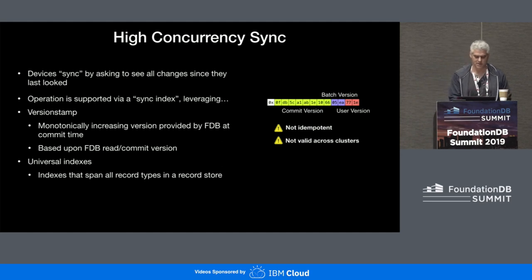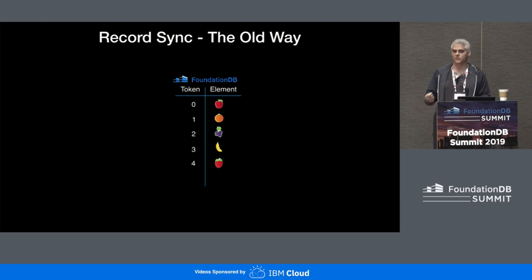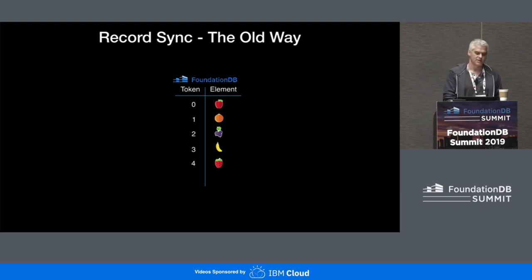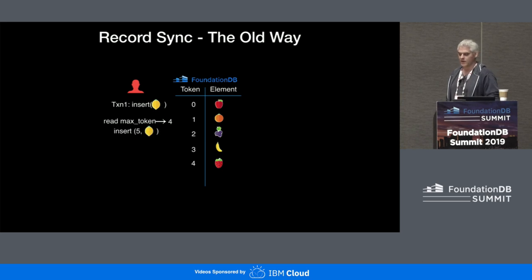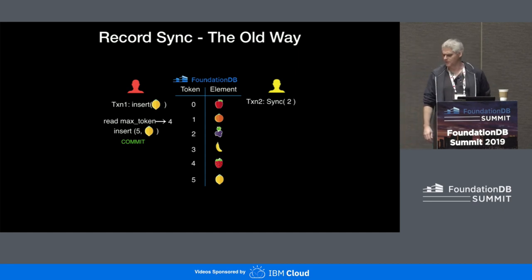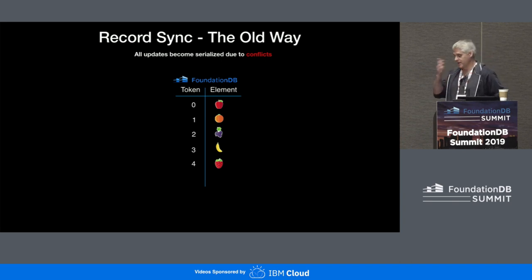Before discussing this in action, let me go into how we used to do it. Our old index was built on this concept of just a change token — every record you insert gets a unique, incrementing number called a change token. A client comes in, they need to insert their lemon. The first thing they do is read the maximum token, see that it's four, increment it, and voilà, we have an ordered commit. If another device last looked at their fruit when the token was at two, and they ask 'what fruit has been added since I last looked?' — they get a banana, a strawberry, and a lemon.